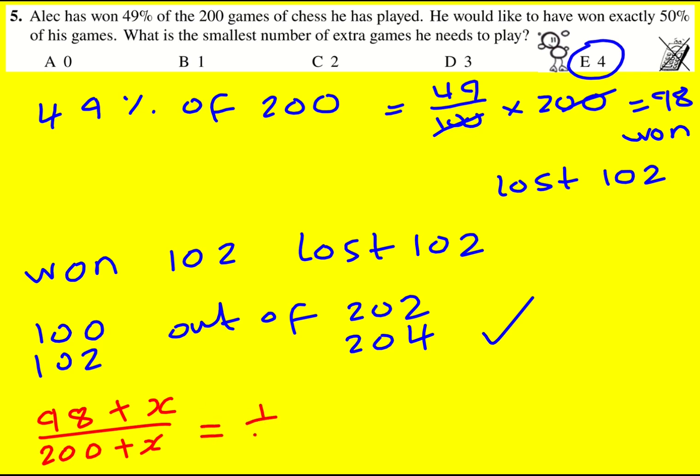And that needs to be a half of the games. So I set up an equation. I don't think this is the best approach, but I didn't spot it initially. So now cross multiply, so times by 2 times by 200 plus X. 196 plus 2X is equal to 200 plus X. And this can be solved to give X equals 4.